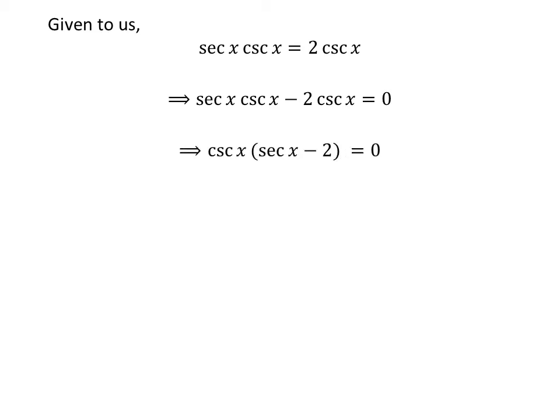Taking the common factor cosecant of x out, we get cosecant of x times (secant of x minus 2) is equal to 0. This expression gives either cosecant of x is equal to 0, or secant of x minus 2 is equal to 0.